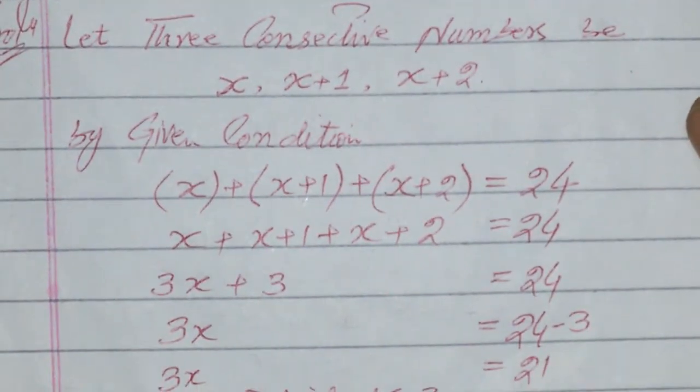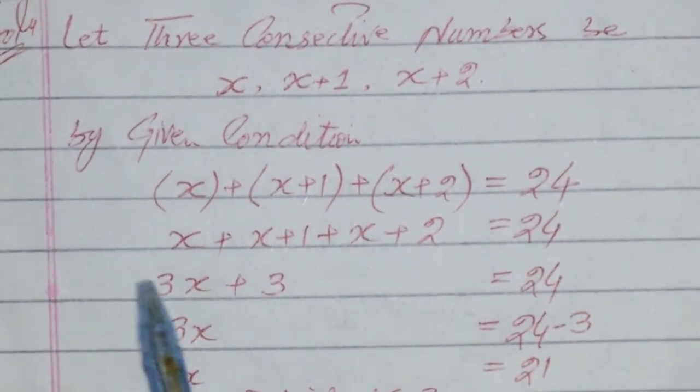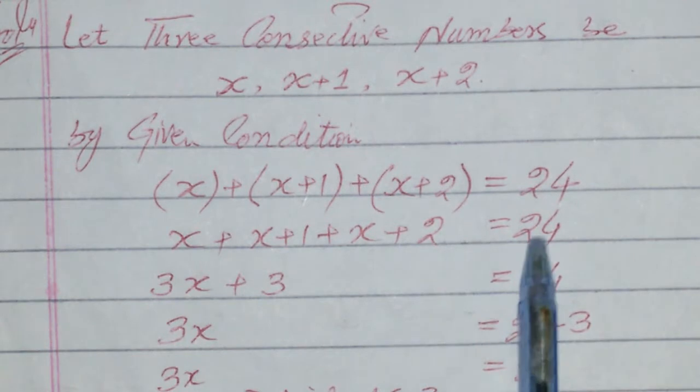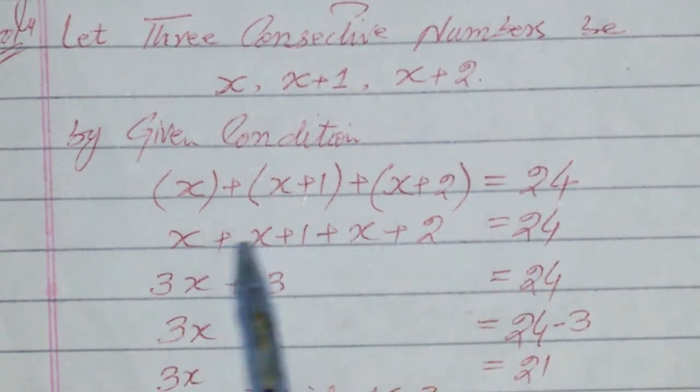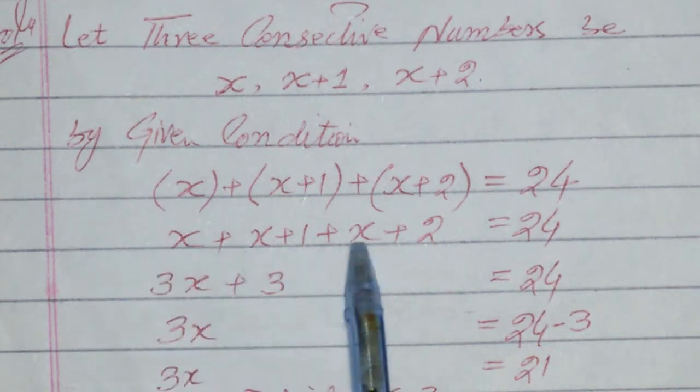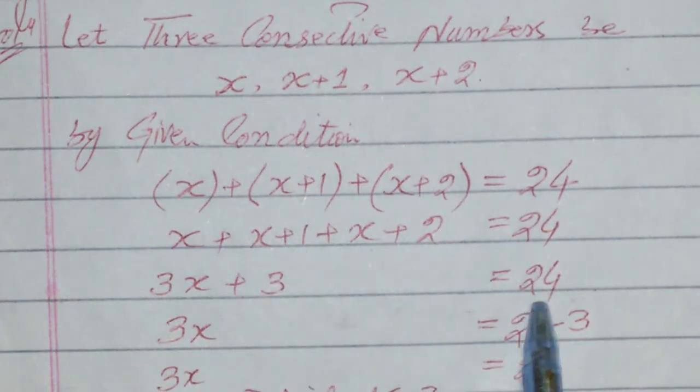Using simple arithmetic operations: x plus x+1 plus x+2 is equal to 24. Taking x common, we get x times (1+1+1) equals 3x, so 3x equals 24. Subtracting 3 from both sides: 3x equals 21.